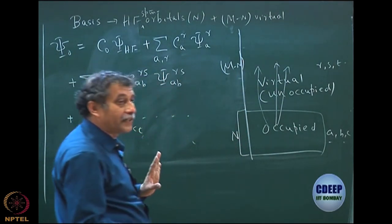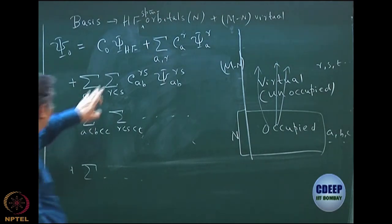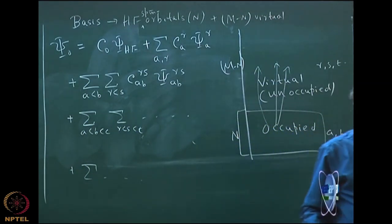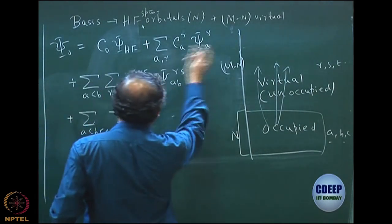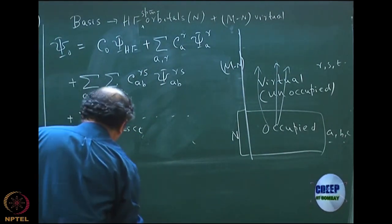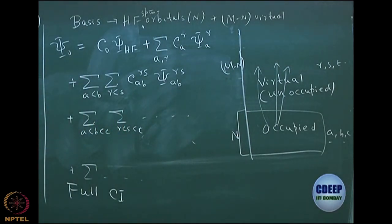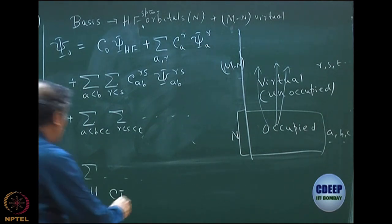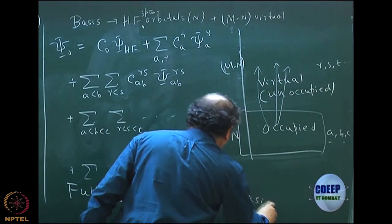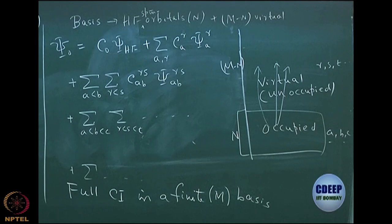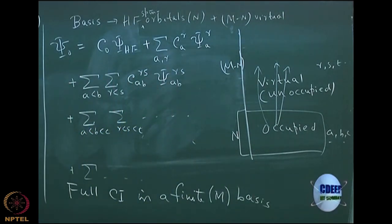In each excitation category, the number of determinants can in principle be infinite; all together the total number is mCn. This becomes an exact wave function — this is what is called full CI, or configuration interaction. Since our m is not infinity, we have to say we do full CI in a finite basis. This finite basis is capital M. This is not really an exact wave function because the exact wave function would require M → ∞; otherwise my initial argument that this is a complete set does not hold if M is finite.